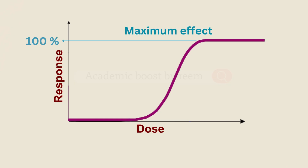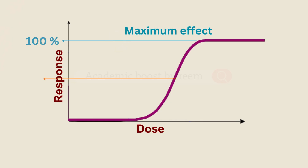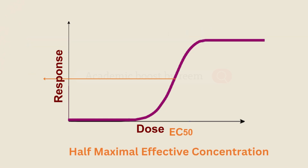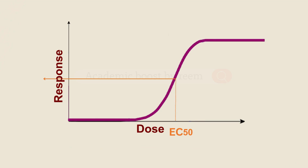This is called Emax, or the maximum effect. We'll talk more about Emax later when we discuss efficacy. If we look at the point where the response is 50 percent of that maximum effect and trace it down to the corresponding drug dose, that dose is called the EC50 — the half-maximal effective concentration. So EC50 is simply the concentration of a drug needed to produce 50 percent of its maximum effect.